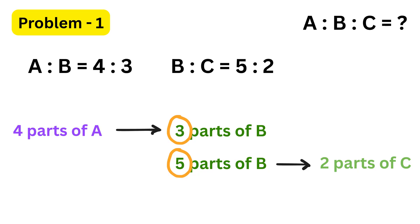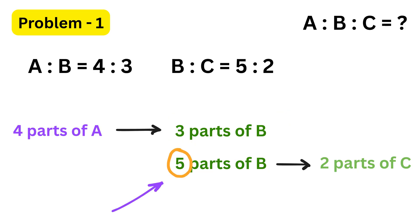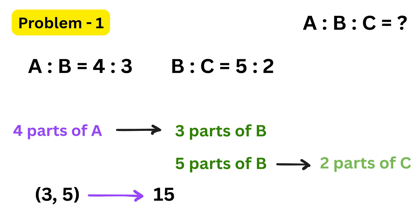In the first ratio, B is three parts, and in the second ratio, B is five parts. To make them equal, we need to find a common number that both three and five can turn into by multiplying. The smallest number that both three and five can become is fifteen. So our goal is to make the B parts in both ratios equal to fifteen.